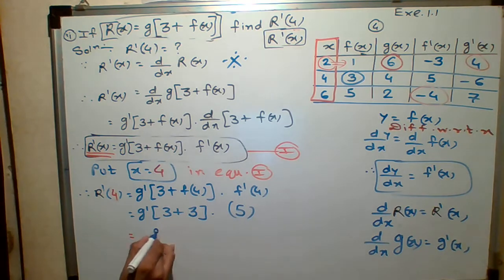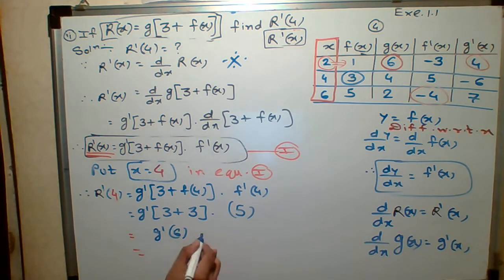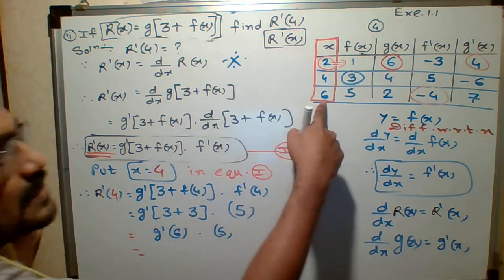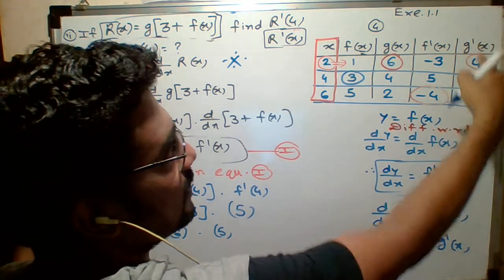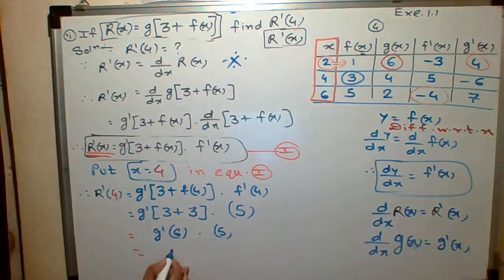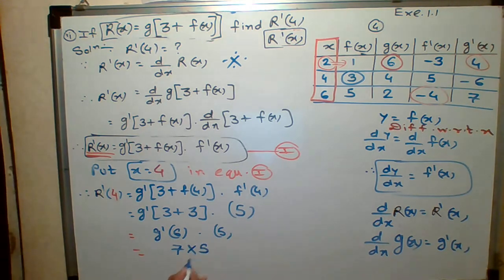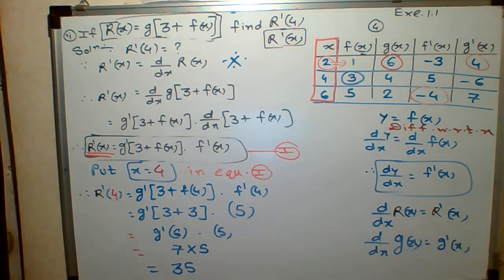Okay. 3 plus 3 is how much? 6. So G dash of 6, multiply by 5. First, G dash of 6. When X is 6, G dash is where? Here. And G dash of 6, 7. 7 multiplied by 5. What is 7 times 5? 35. This is your answer. Hope so you understood the numerical. Please copy.